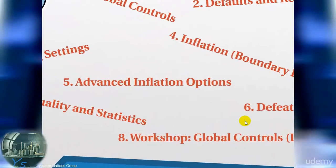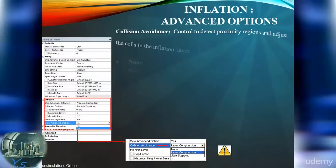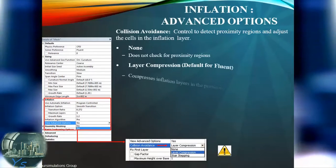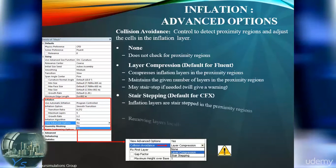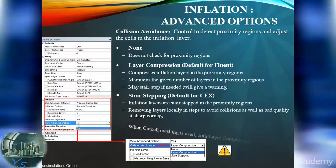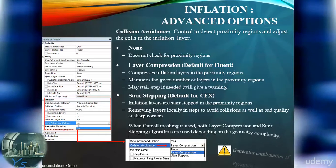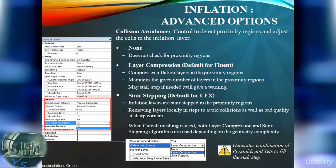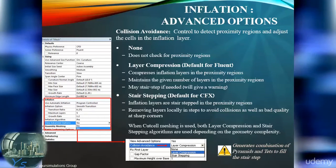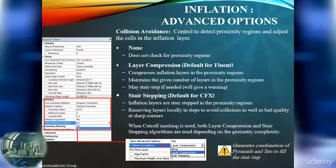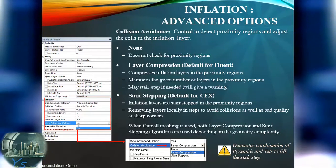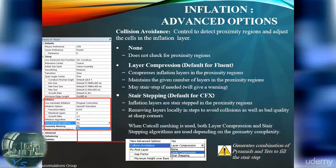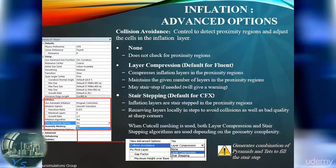The advanced inflation options allow us even more control. One important part of inflation growth is the avoidance of collisions in small gaps. Of course, this takes time, so it can be disabled if we are sure that no such regions exist. If they do exist, the mesh becomes invalid. To avoid an invalid mesh, we have two options available: layer compression and stair stepping.